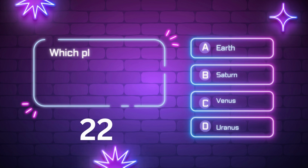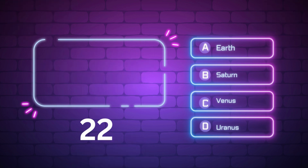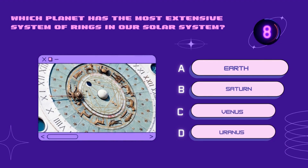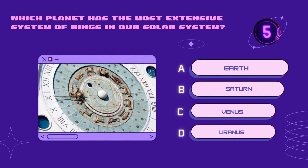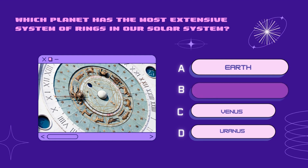Which planet has the most extensive system of rings in our solar system? Earth, Venus, Saturn, Uranus. Your time starts now. Right answer is Saturn.